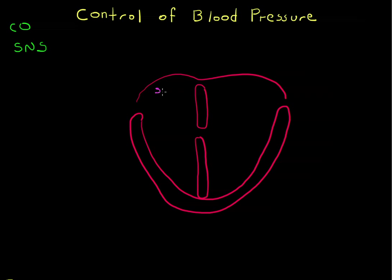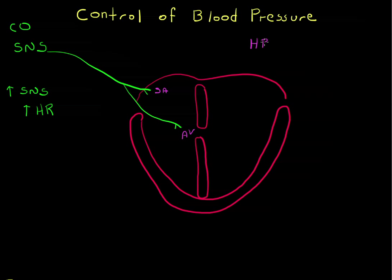The sympathetic nervous system sends a signal to the SA node and the AV node in the heart. An increase in the sympathetic nervous system signal to the SA node and the AV node leads to an increase in the heart rate. Since heart rate times stroke volume gives us cardiac output, an increase in cardiac output leads to an increase in blood pressure.